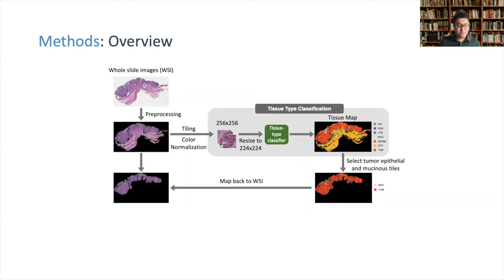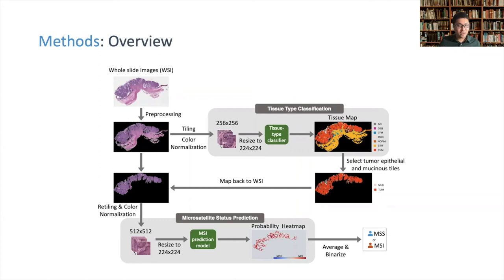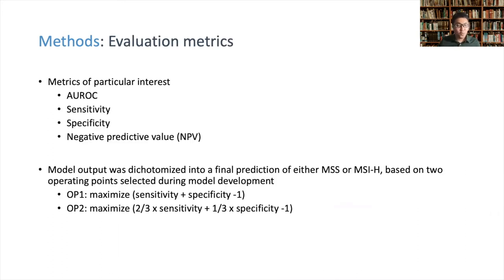The regions were mapped back to the whole slide image, and we generated a separate set of larger-size tiles, which were input into the MSI prediction model to yield tile-level output for MSI status. These tile-level outputs were aggregated by taking the average to obtain a patient-level score. The MSI prediction model was based on MobileNet v2, pre-trained on ImageNet, and trained by transfer learning using the Stanford CRC dataset. We validated model performance using the TCGA CRC dataset, reporting standard AUROC as well as sensitivity, specificity, and NPV.